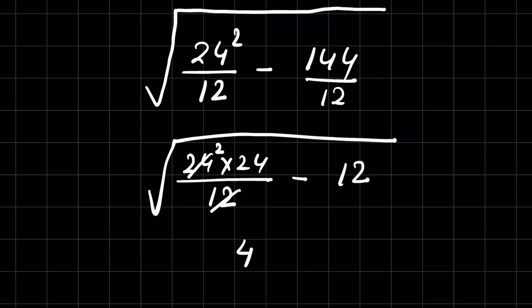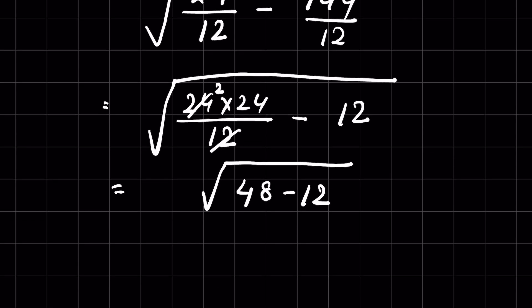12 times 2 is 24, so 48 minus 12. 24 times 2 is 48 under square root. 48 minus 12 is 36. 36 under square root. Answer is 6.